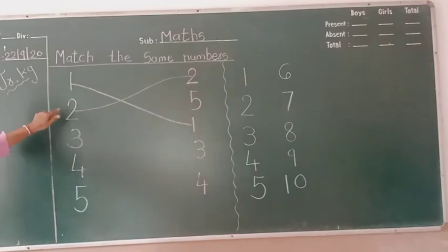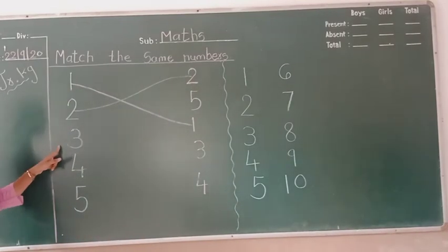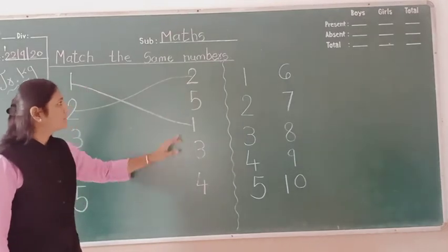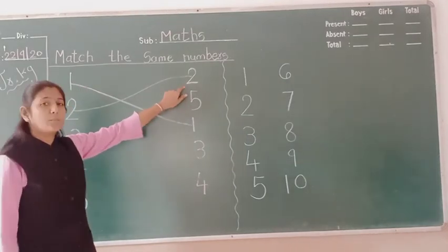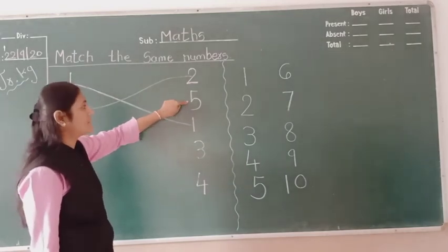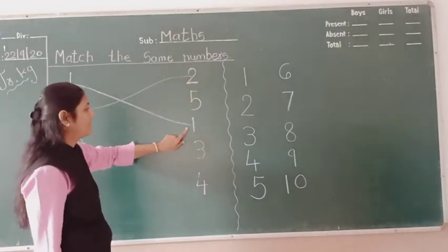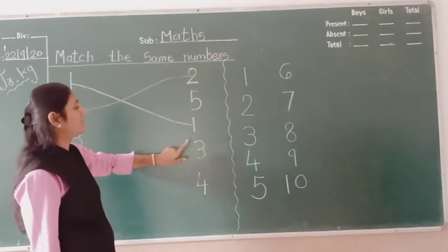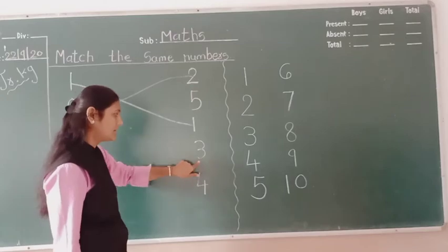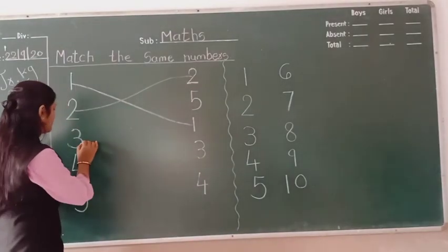For 2 and number 3. So which is number 3 in this row? This is number 2. This number is... yes, this is number 5. This number is... this is number 1. This number is... yes, this is number 3, so match it.